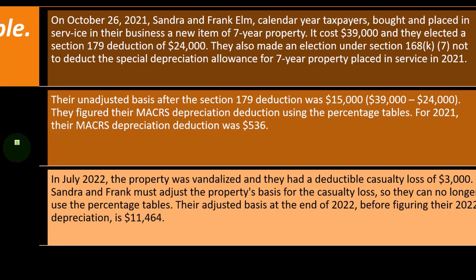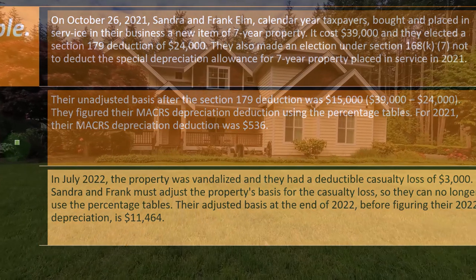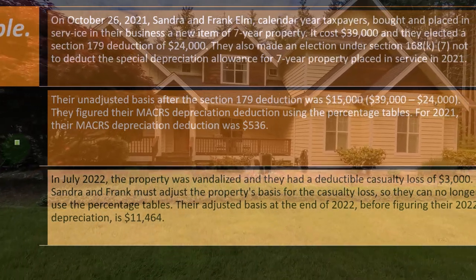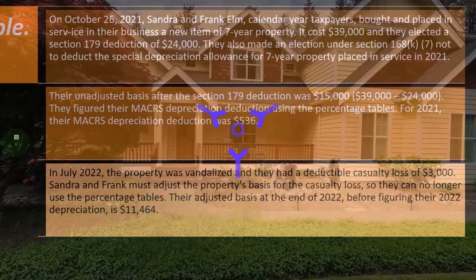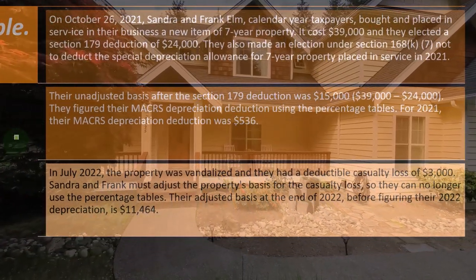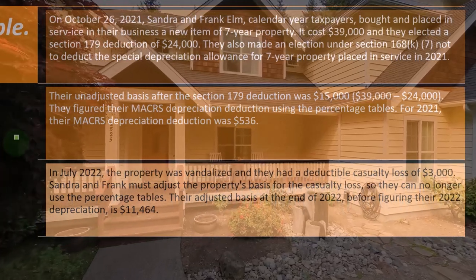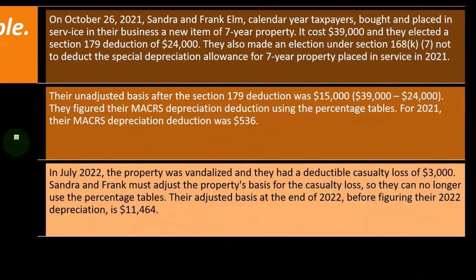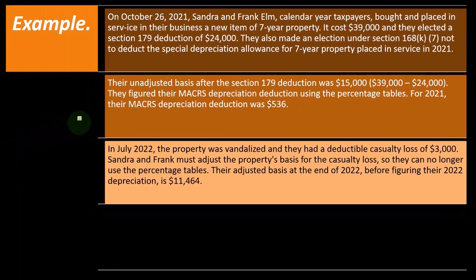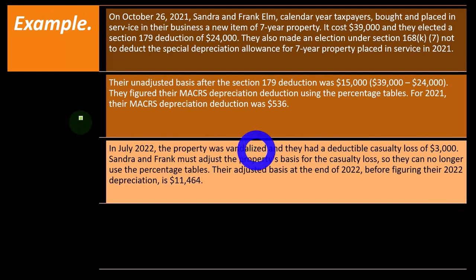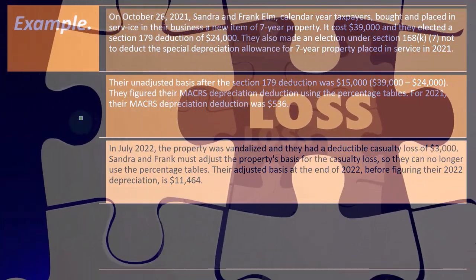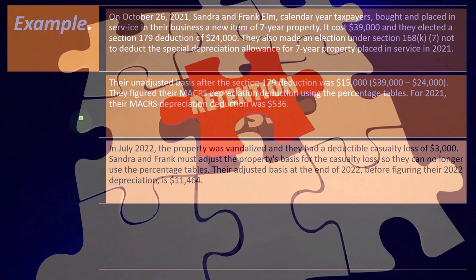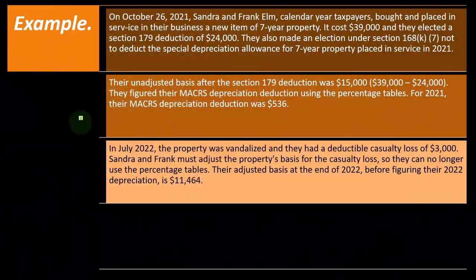So in July 2022, the property was vandalized and they had a deductible casualty loss of $3,000. So Sandra and Frank must adjust the property's basis for the casualty loss. If there was a casualty loss related to a piece of property, you'd expect that you'd need to decrease the basis — because otherwise you'd be double dipping, since you would have got the loss and you'd also get the depreciation at some point in the future. So Sandra and Frank must adjust the property's basis for the casualty loss so they can no longer use the percentage tables.